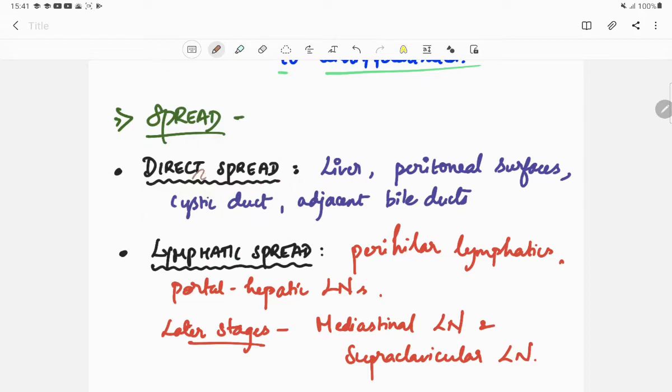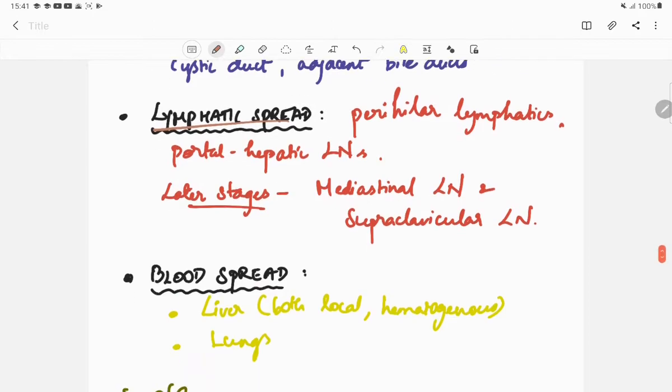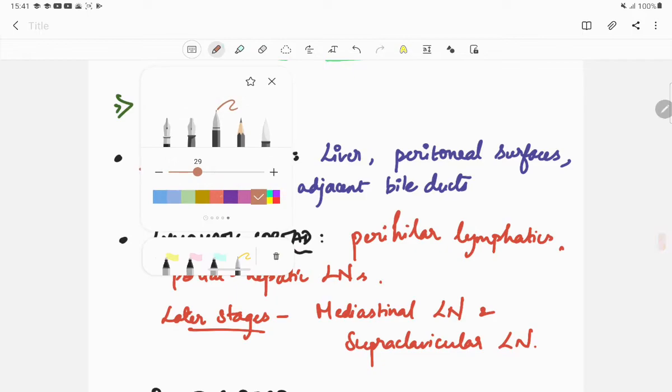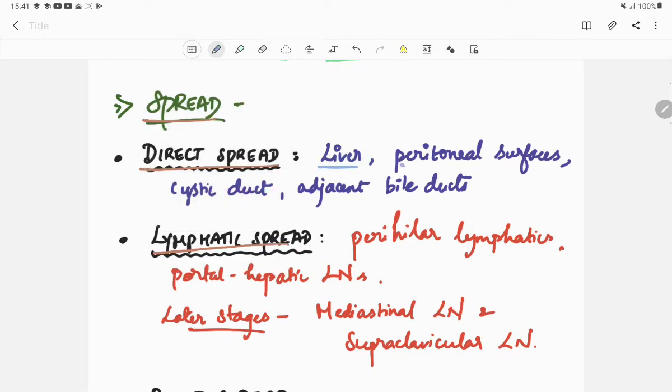Next is the spread. The spread of gallbladder carcinoma can be either direct spread, lymphatic spread, or hematogenous spread. First is direct spread: direct spread is to the liver, peritoneal surfaces, cystic duct, and adjacent bile ducts.